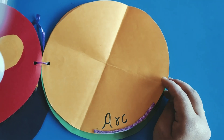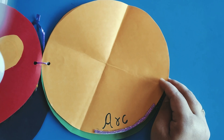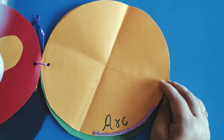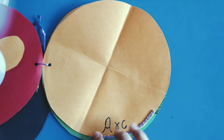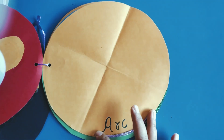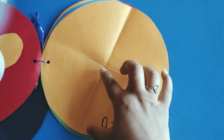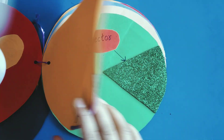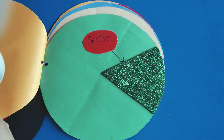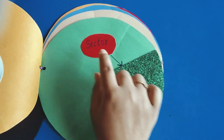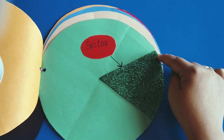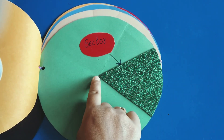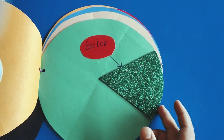The next part of the circle is a sector. If you join the two endpoints of the arc with the center, we get a region, and that region is known as a sector.